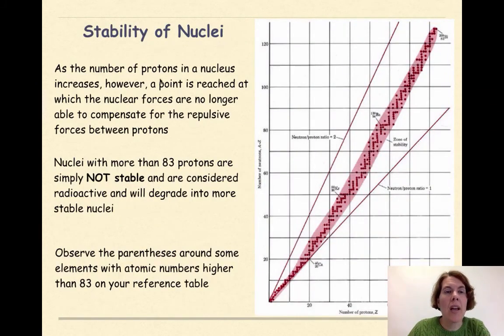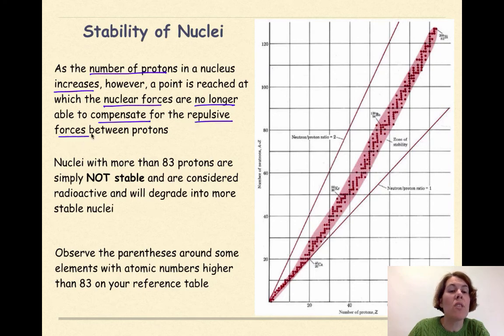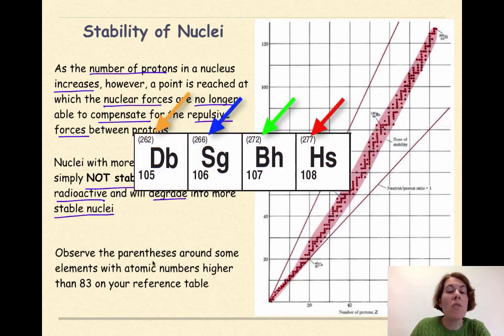Stability of nuclei. As the number of protons in a nucleus increases, a point is reached at which the nuclear forces are no longer able to compensate for the repulsive forces between the protons. Nuclei with more than 83 protons are simply not stable and are considered radioactive and will degrade or break down into more stable nuclei. Observe the parentheses around some elements with atomic numbers higher than 83 on your reference table. That's a pretty good indicator that those elements are unstable because they can only give a general estimate of what the atomic mass would be.